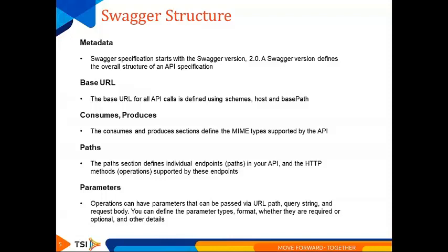Let's look at the basic structure of a Swagger document. It requires metadata information like the Swagger version, which is the API definition version, and header information. It also requires a base URL — the project directory path — plus the system name, schemes such as HTTP or HTTPS, and the system host, port, and base path.